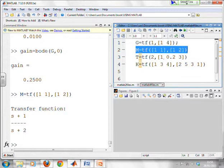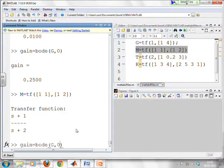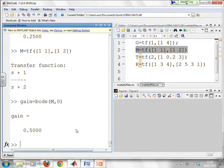So let's try this. I'm going to write bode of M comma 0. And what do we get? We get a half, as expected.